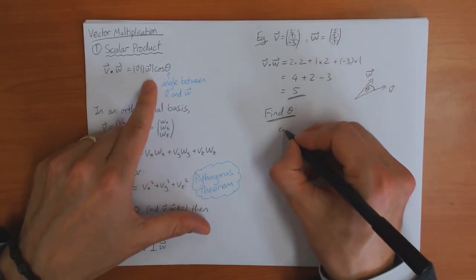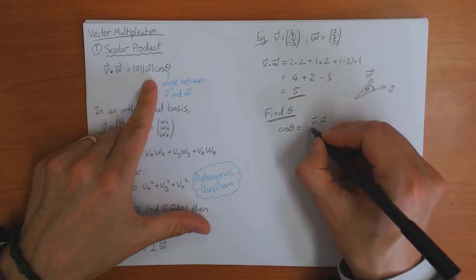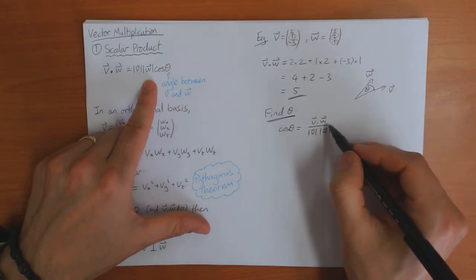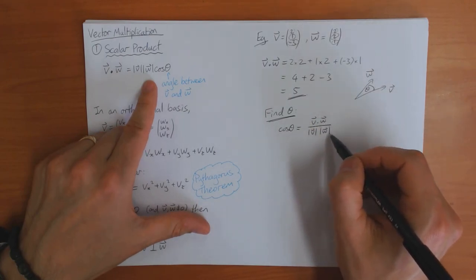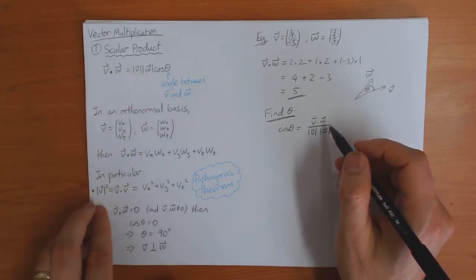So from this formula here, we can write that cos theta is equal to v dot w divided by the length of v times the length of w. So we've already found that this is equal to five. So we need to find the length of v and w. And we can find the length of v and w using this result here.